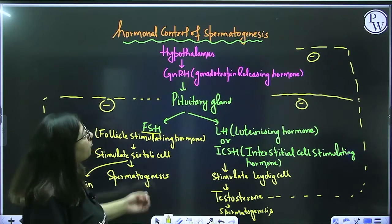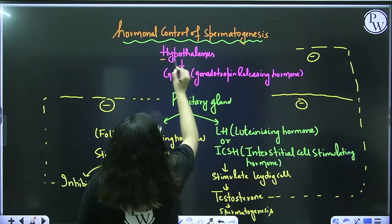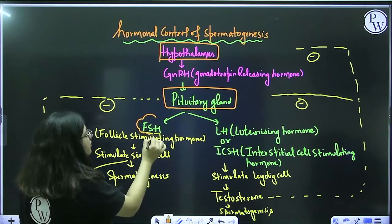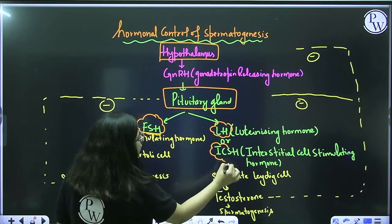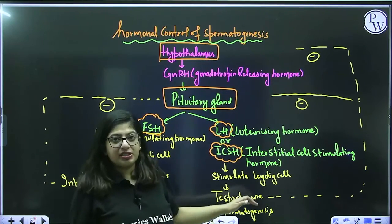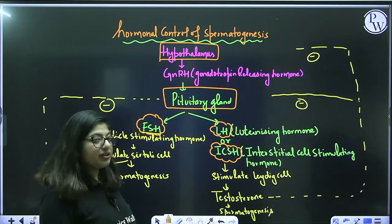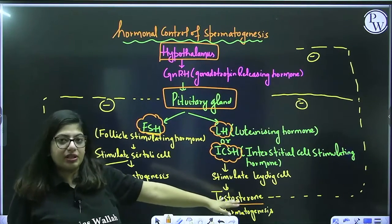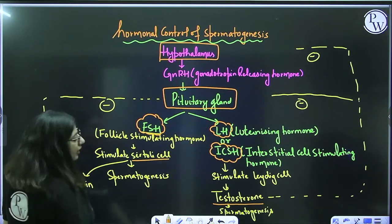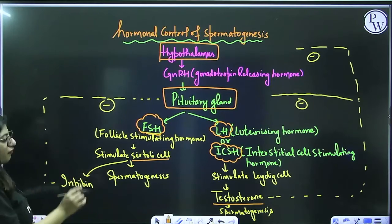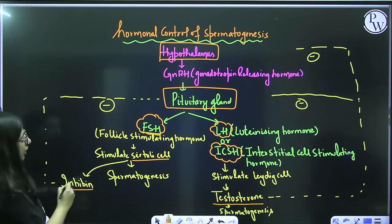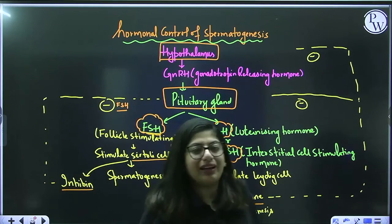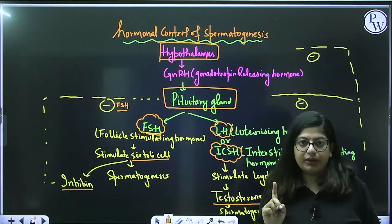To summarize hormonal control: Hypothalamus secretes GnRH → stimulates anterior pituitary → which secretes FSH and LH. LH (ICSH in males) stimulates Leydig cells → which secrete testosterone → testosterone aids spermatogenesis and gives negative feedback to hypothalamus and pituitary. FSH stimulates Sertoli cells → controls spermatogenesis; Sertoli cells secrete inhibin → which gives negative feedback to pituitary for FSH specifically.